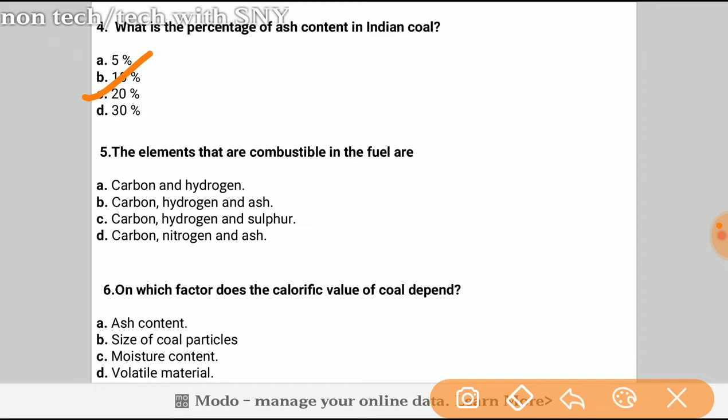The next question is: The elements that are combustible in the fuel are? The answer will be C, carbon, hydrogen, and sulfur. The sixth question is: On which factor does the calorific value of coal depend? So the answer will be A, ash content.